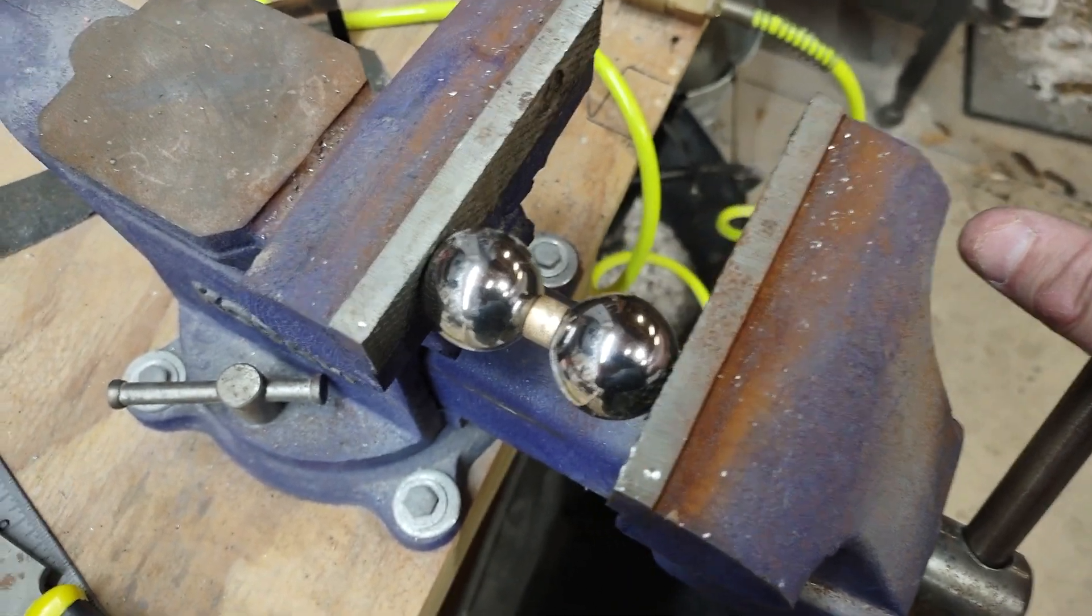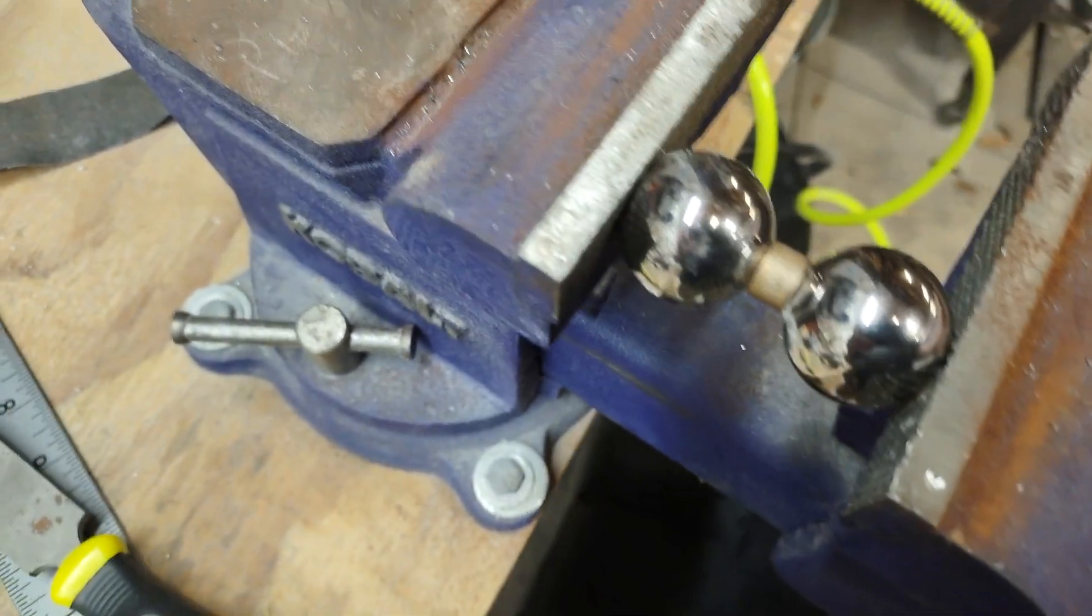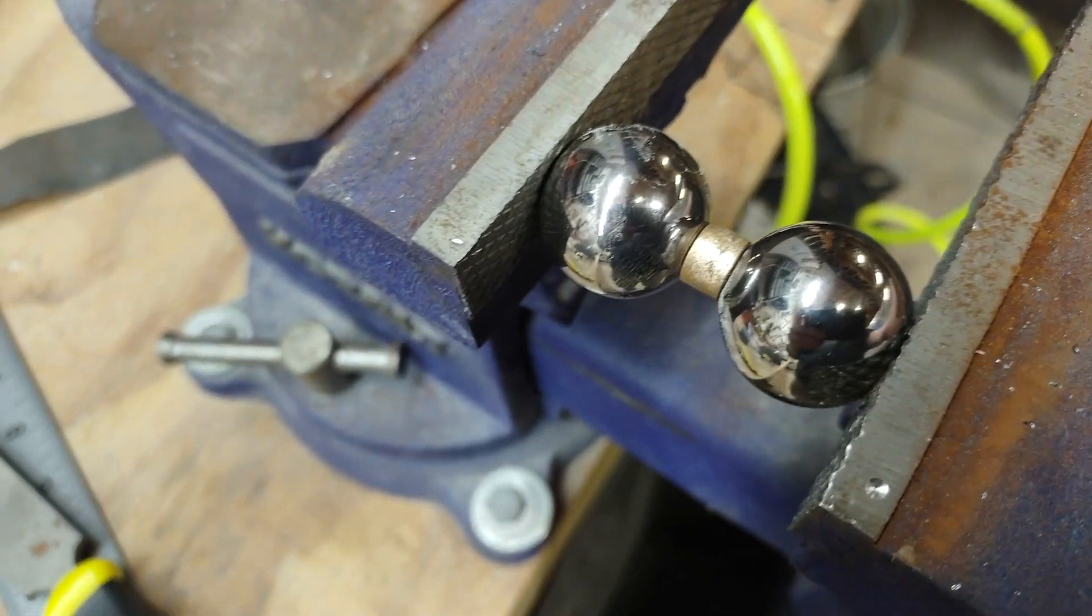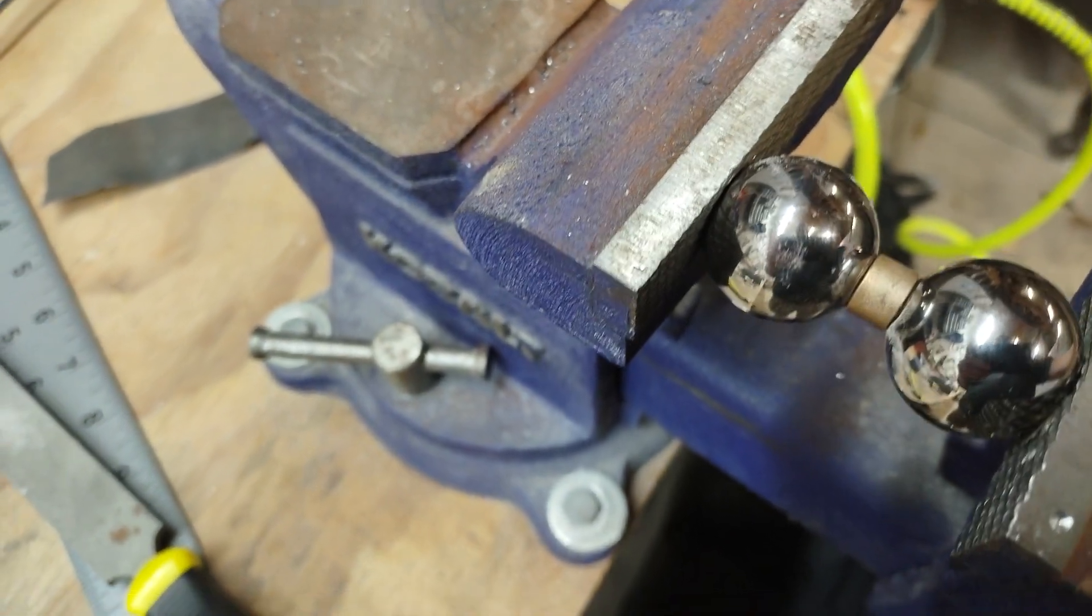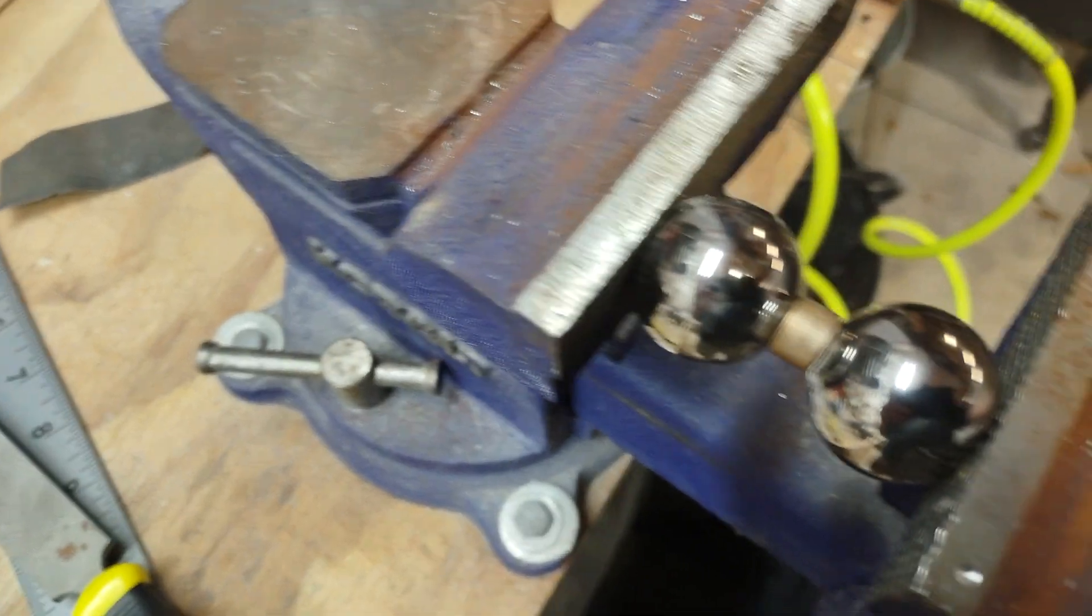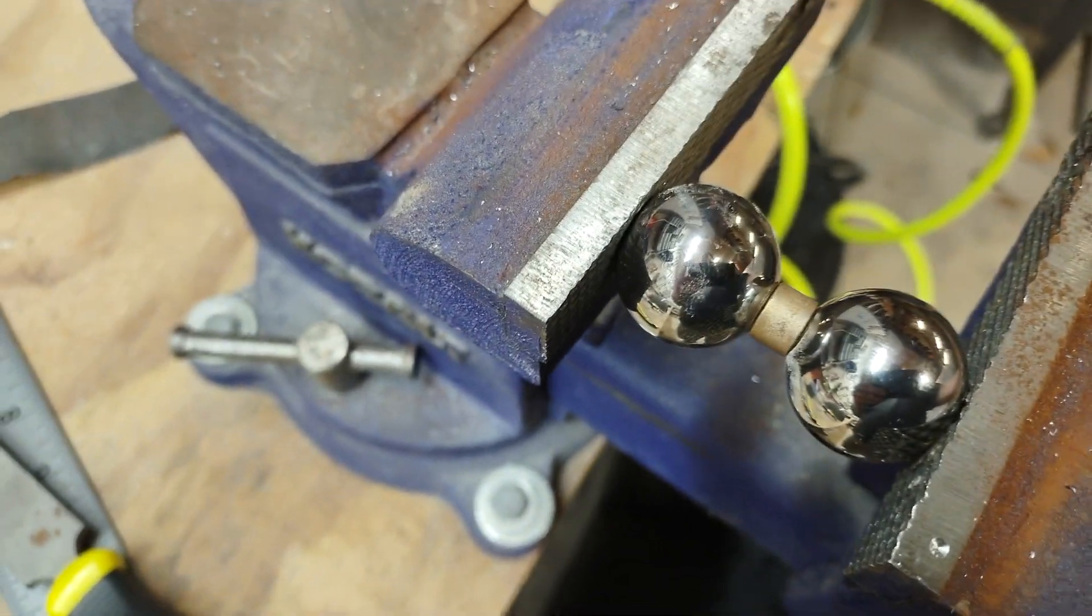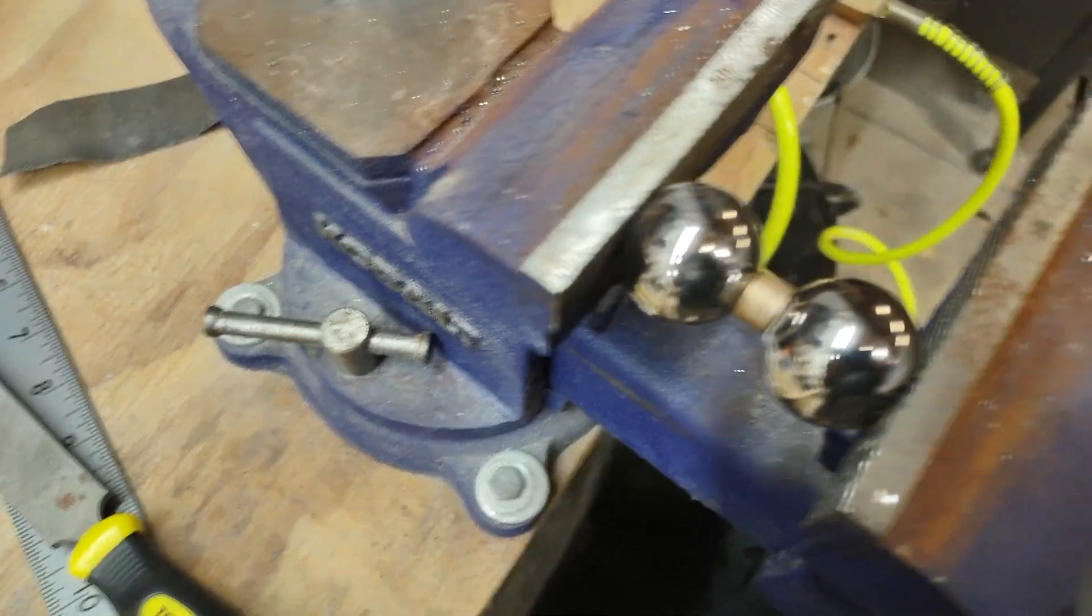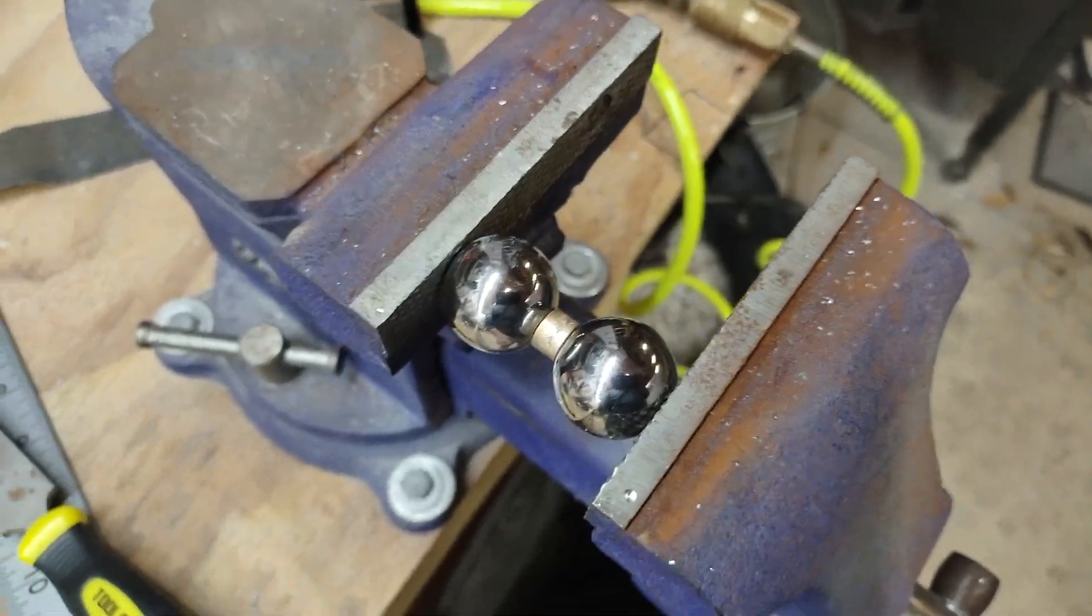You can kind of look at the sheen on top of the brass and it gives you a good idea of whether or not it's deformed. So that's about 90. I hope I didn't go too much there, but that's about 90. I'm gonna give that a go and we'll see how it fits.